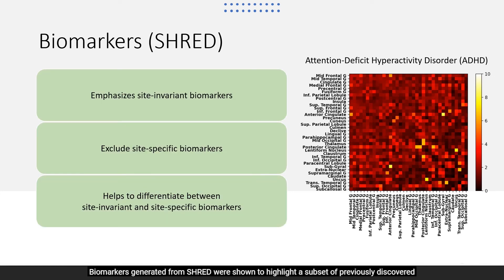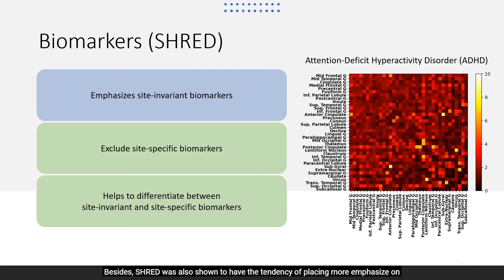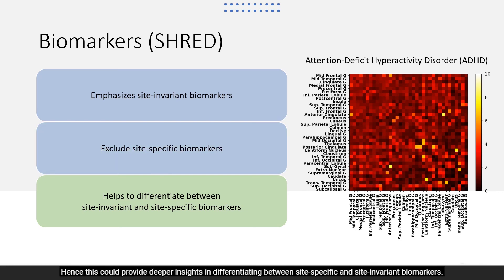Biomarkers generated from SHRED were shown to highlight a subset of previously discovered site-specific biomarkers, which could potentially represent site-invariant biomarkers. Besides, SHRED was also shown to have the tendency of placing more emphasis on site-invariant biomarkers and excluding site-specific biomarkers during disease classification. Hence, this could provide deeper insights in differentiating between site-specific and site-invariant biomarkers.